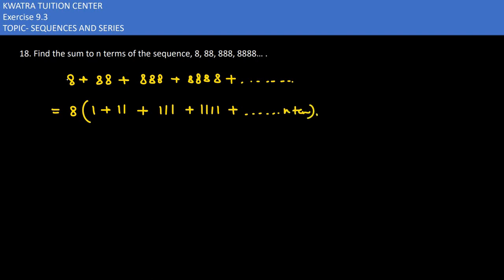Now we take 8 common. Now we will multiply and divide by 9. What do we get? First 9, second 99, third 999, fourth 9999, up to n terms.